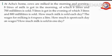See the next question. At Achu's home, cows are milked in the morning and evening. 8 liters of milk is got in the morning, of which 6 liters and 700 ml is sold. 5 liters is got in the evening, of which 3 liters and 800 ml is sold. How much milk is sold each day? The wages for milking is 6 rupees a liter. How much is spent each day on wages?